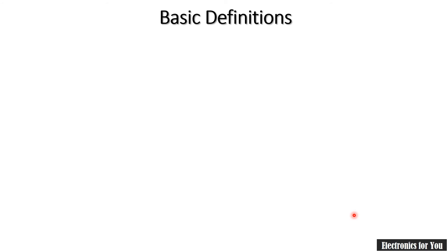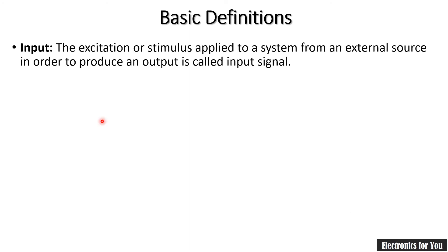Now, basic definitions which are related in the control system. First, input. The excitation or stimulus applied to the system from the external source in order to produce an output is called input signal.